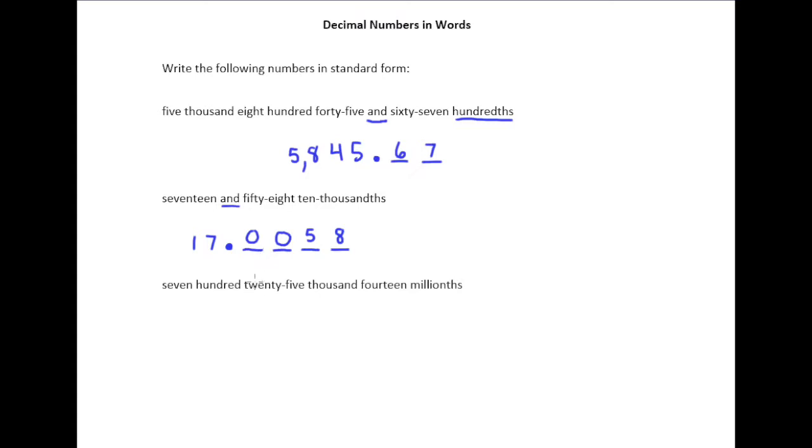All right, finally, 725,014 millionths. Notice there's something missing here. There's no and. So if there's no and, what we know is that there is no whole part. If there's no and, there is no whole part. So the word and is kind of hiding over here. I suppose they could have said zero and all this. So we know right away we can just put zero point and then we go ahead and look at this place value here.